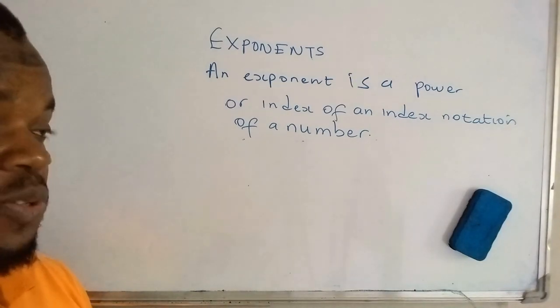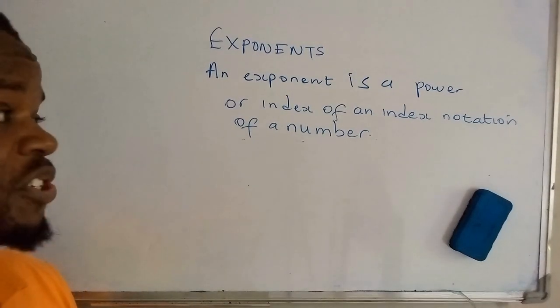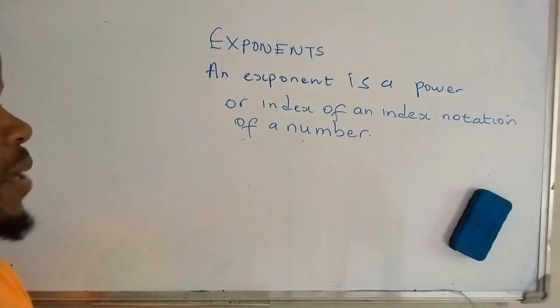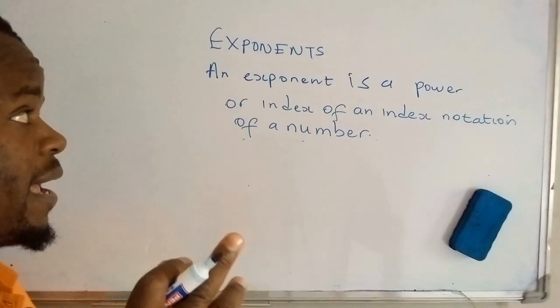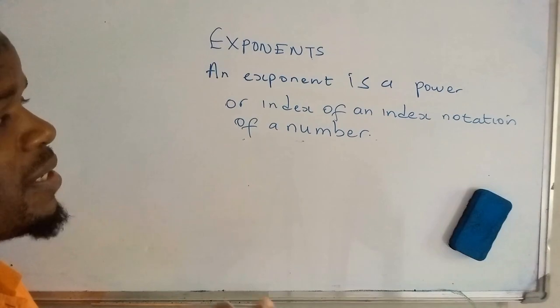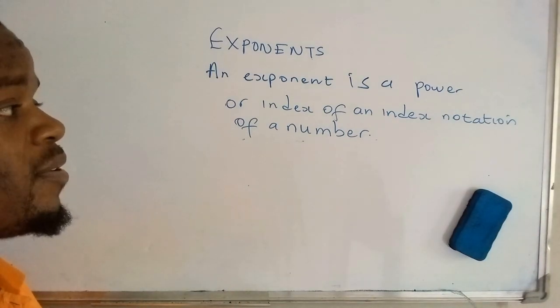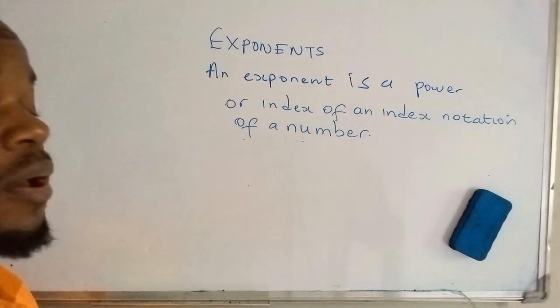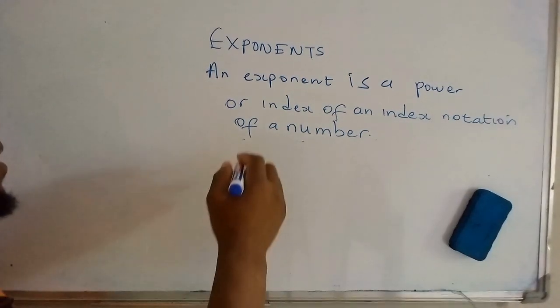Then you should be able to single out bases from that index notation, so I should be able to differentiate the two. Okay, so now what is an exponent? So an exponent is a power or index of an index notation of a number.